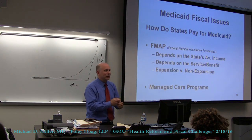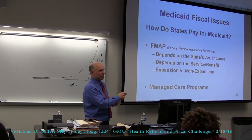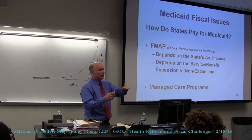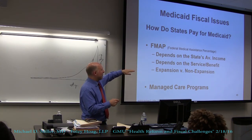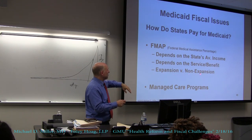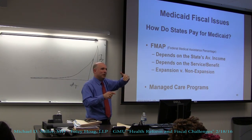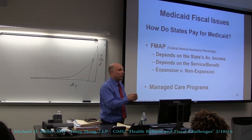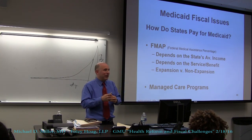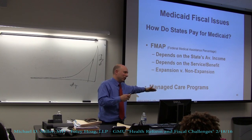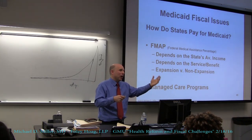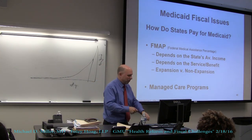How do states pay for Medicaid? There's the FMAP — the Federal Medical Assistance Percentage — which is the percentage of spending the federal government pays. The minimum is 50%, and it goes up from there depending on the state's average income, the service, and the benefit. For example, for family planning the federal government pays 90%. For the ACA Medicaid expansion population, the federal government paid 100% for three years, then it ramps down to 90%. The president's budget proposed that states that haven't expanded yet would also get that 100% for three years if they start now.